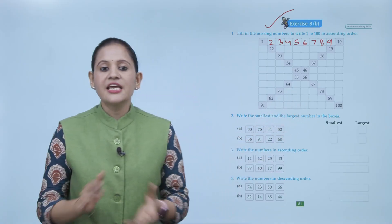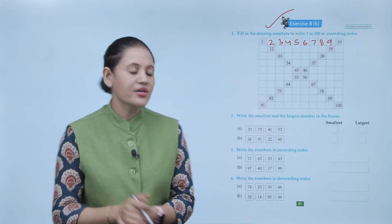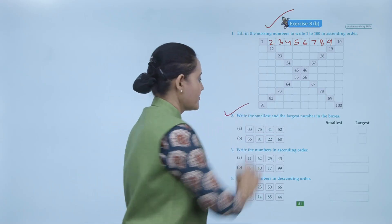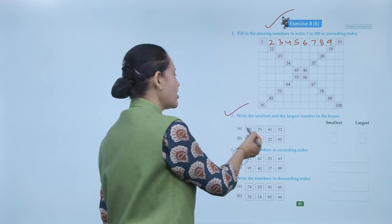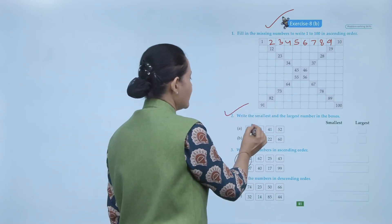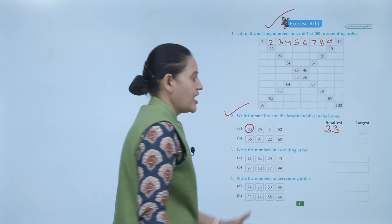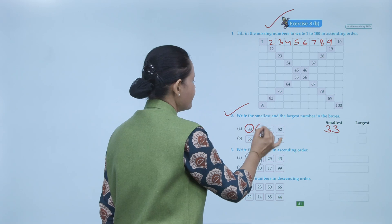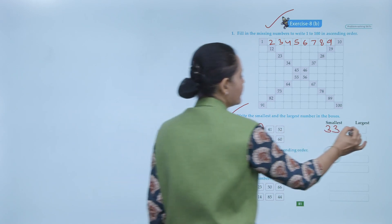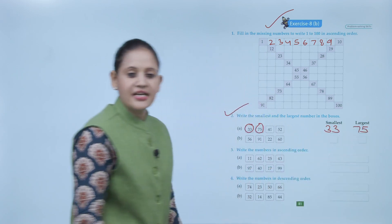Next, write the smallest and largest number in the boxes. Among these numbers, which is the smallest? 33. So write 33 here. And the largest? 75. So write 75 here. Clear?